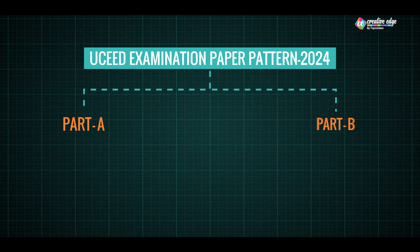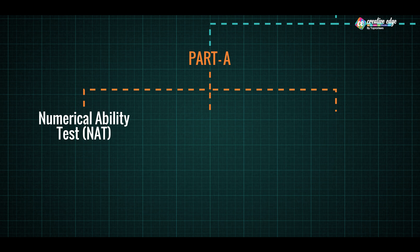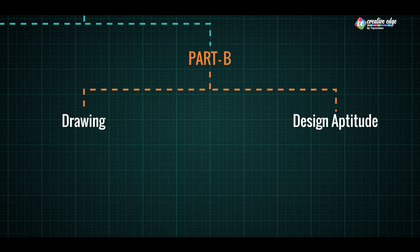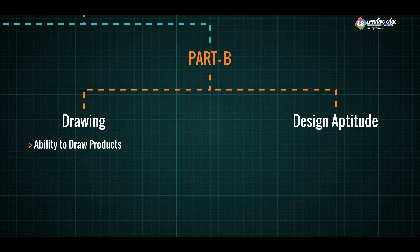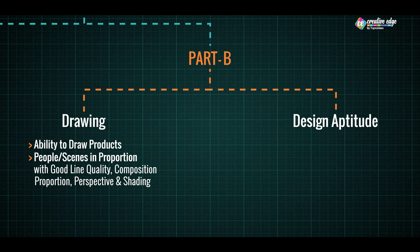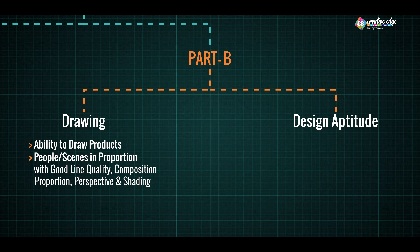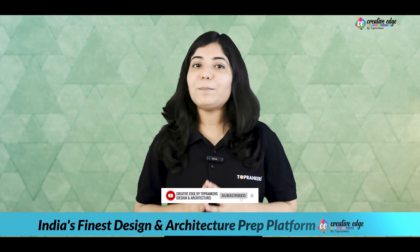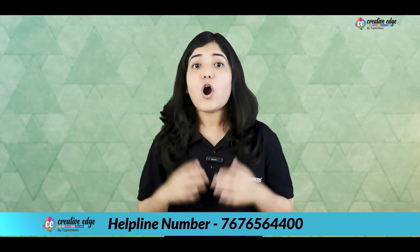Now let's look at the expected paper pattern. Part A is still divided into three sections: Section 1 is Numerical Ability, Section 2 is Multiple Select Questions, and Section 3 is Multiple Choice Questions. Part B now consists of drawing and design aptitude, with questions from additional topics as mentioned on UCEED's official website. The detailed breakdown of marks for Part B has not yet been officially announced by UCEED. Subscribe to the Creative Edge channel and press the bell icon to get updates about any official announcements from UCEED.